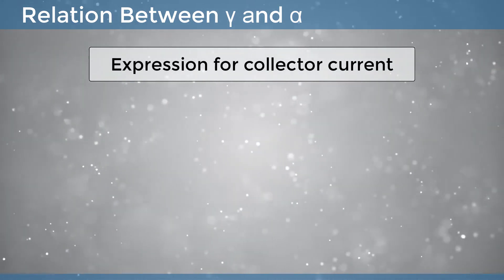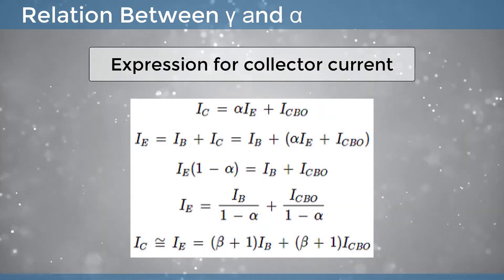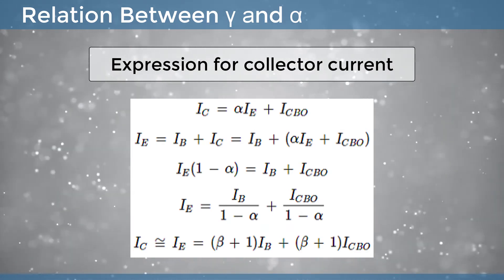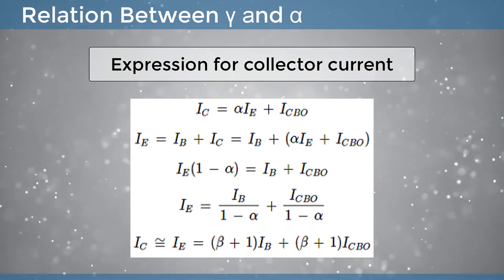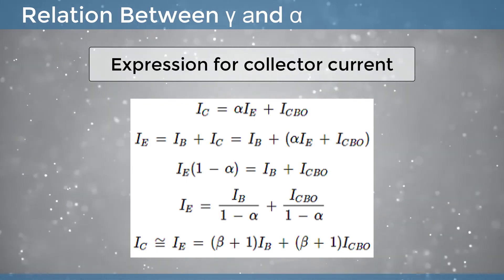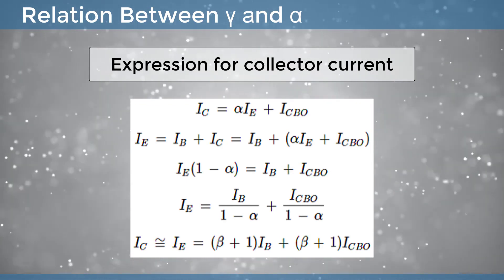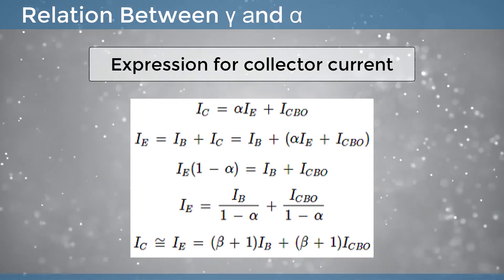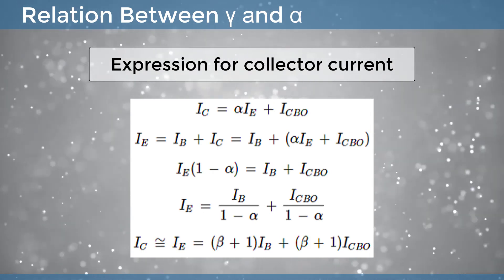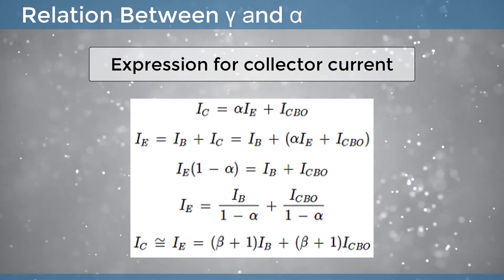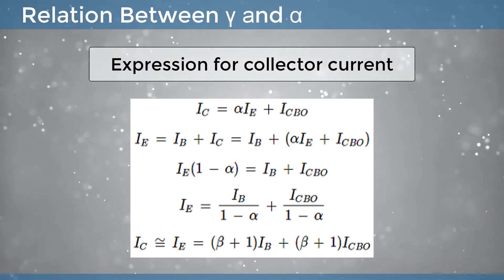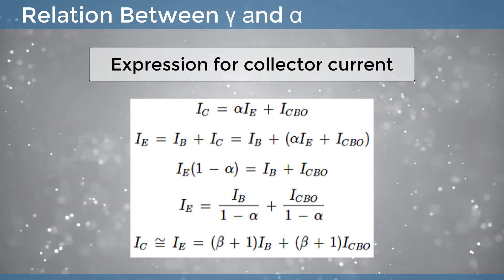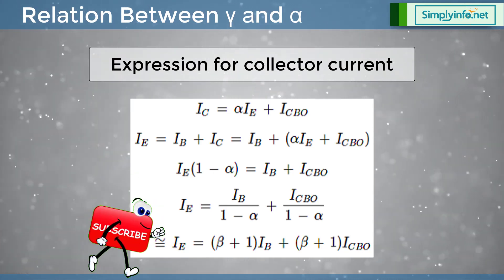Expression for Collector current: We know IC is equal to alpha IE plus ICBO. Since IE is equal to IB plus IC, substituting gives IE equal to IB by 1 minus alpha plus ICBO by 1 minus alpha. Therefore, IC is approximately equal to (beta plus 1) times IB plus (beta plus 1) times ICBO. This is the expression for collector current.